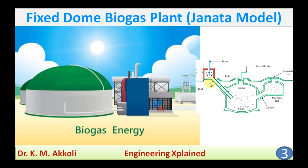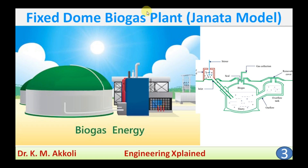Hello everyone, welcome back. In this session I am going to explain about the fixed dome biogas plant, also called the Janta model. Biogas is the gas produced from the anaerobic digestion of biomass, particularly wet biomass and cow dung. Whatever plant we use for the production of biogas is called a biogas plant.